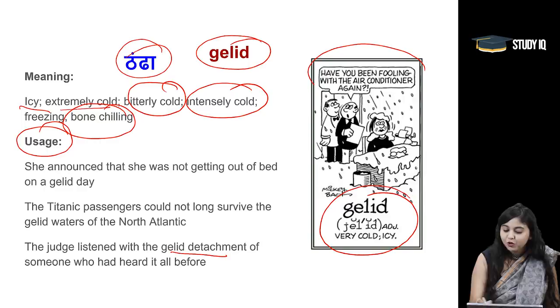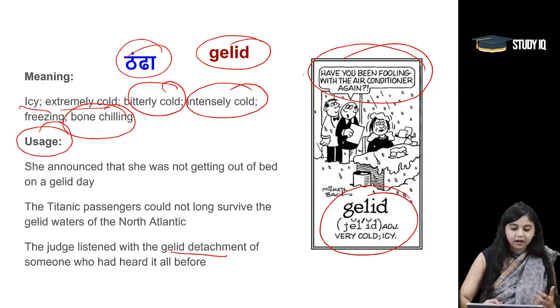Have you been fooling with the air conditioner again? Because it's become very gelid. So, gelid means thanda — that is its arth hota hai. Moving on to the next word: hapless.